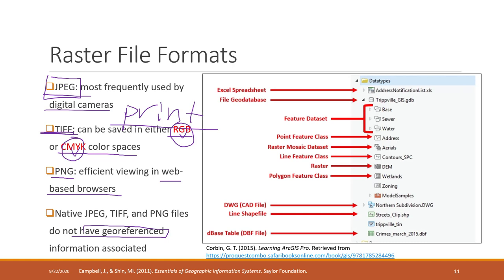Let's look at how data is organized in ArcGIS Pro. Normally we have a working folder and a file geodatabase. Every time you create a project, ArcGIS Pro creates a file geodatabase for you. Within the file geodatabase, you can have spatial features such as polygons, polylines, and points. Those are called feature classes when they are inside the geodatabase. If you export them outside the geodatabase, you normally save them as shapefiles.